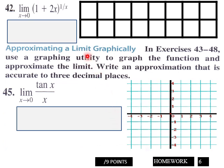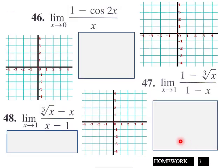And then Page 6, you've got 9 points here. You continue that from previous, and then down here, graph the function, approximate the limit, write an approximation that is accurate to 3 decimal places. Here, use a graphing calculator to graph it. So you've got 9 points here, Page 6.